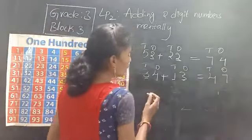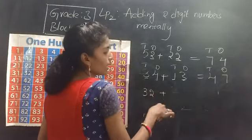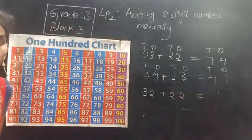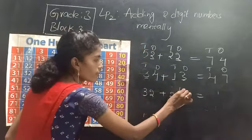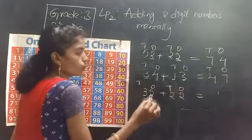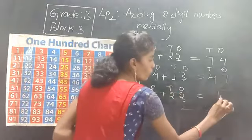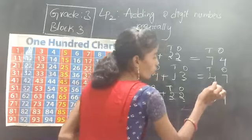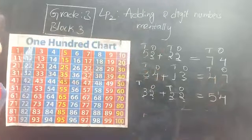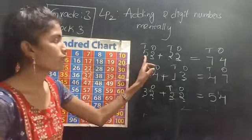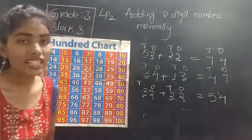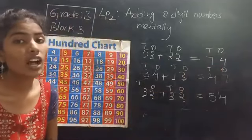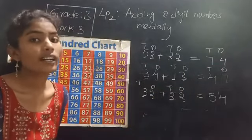One more example: 32 plus 22. In the 1s place we have 2 and 2 — so 2 plus 2 is 4. In the 10s place, 3 plus 2 is 5. So 54 is the answer. The numbers we are adding are called addends, and the number we get after adding is called the answer — also called the sum or total.